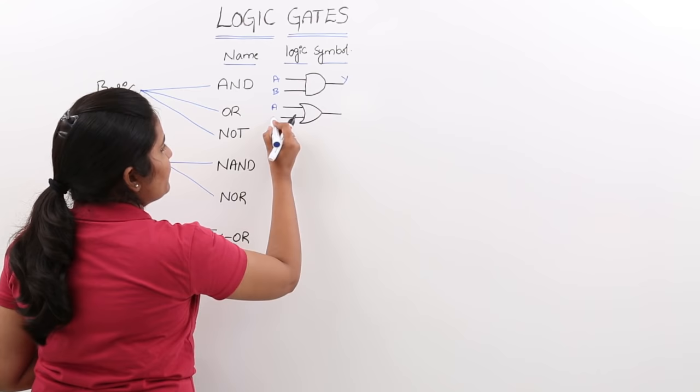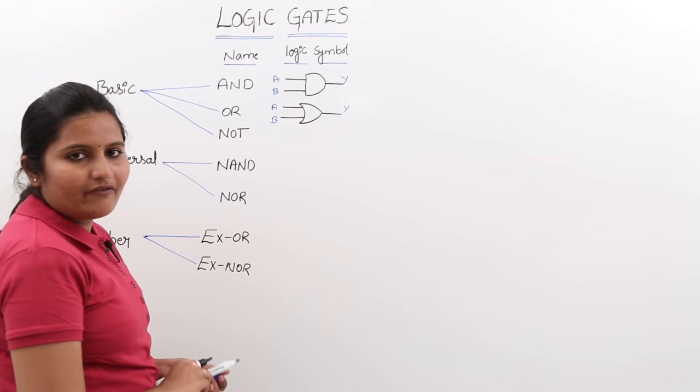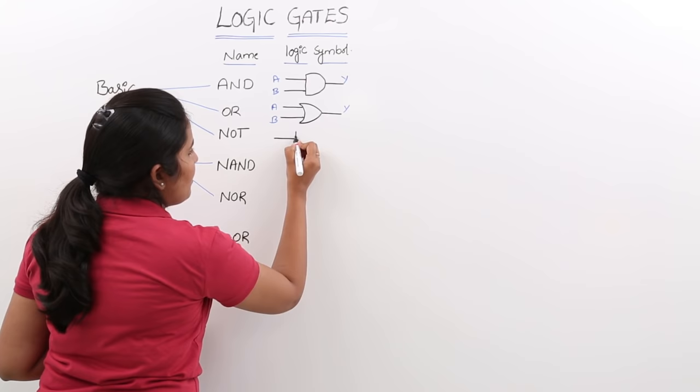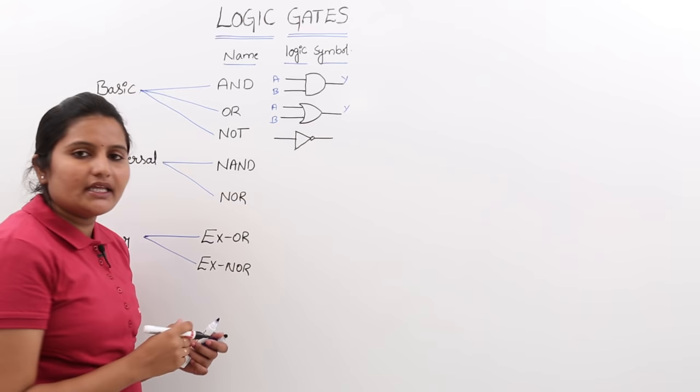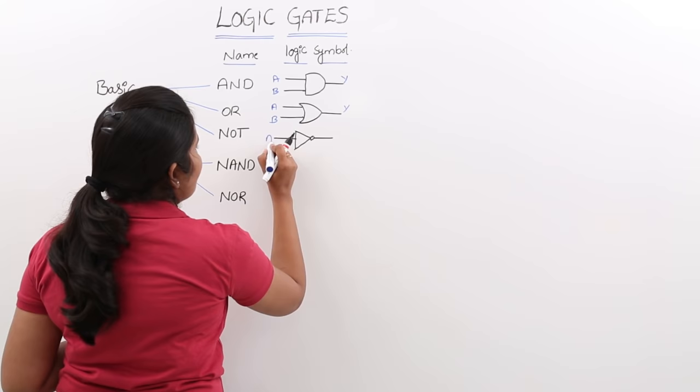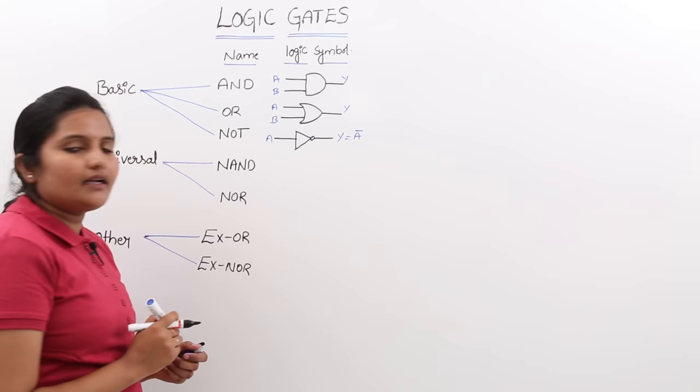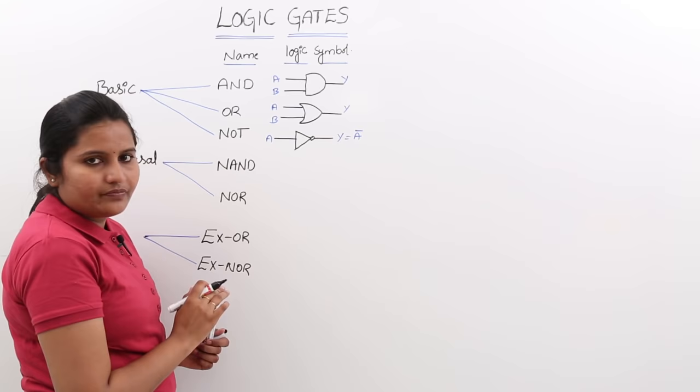Similarly, we have the logic symbol for NOT gate. For NOT gate there is only 1 input and 1 output. This output is the complement of the input. For example, if you provide A as input, the output Y is equivalent to A-bar, that means the complement of the input. For NAND gate — NAND is nothing but NOT AND, so the complement of AND is NAND.